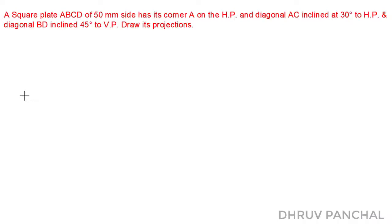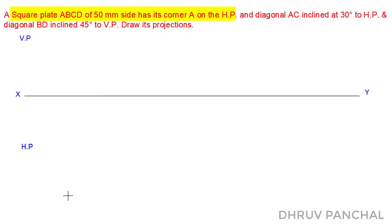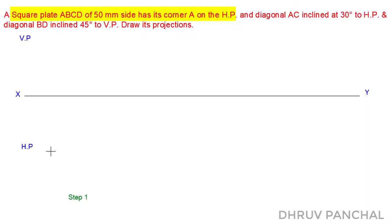To solve this problem, with the help of a roller scale, draw a horizontal line XY and mark the vertical plane above line XY and the horizontal plane below line XY. As per the given data, the corner A of the square plate is on the horizontal plane. So in Step 1, we will assume that the square plate is resting in the horizontal plane by its corner. In that case, the top view will give us the true shape of the square plate.